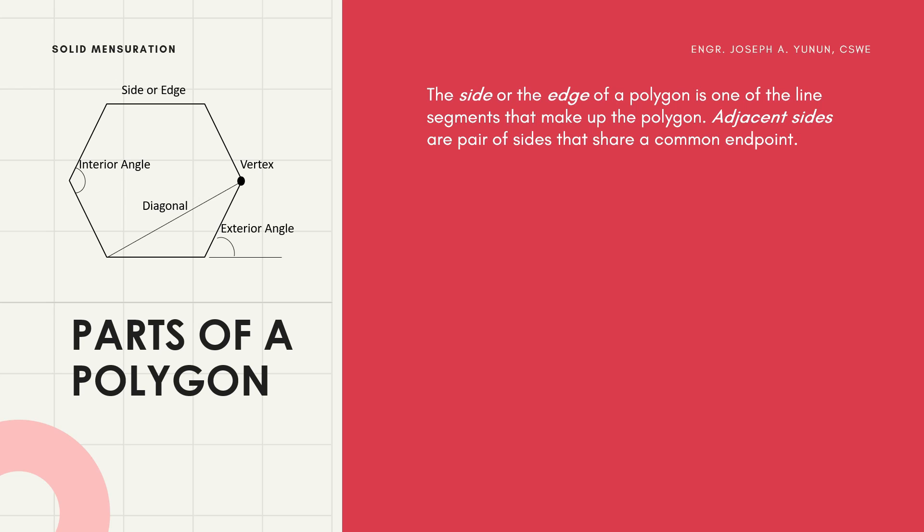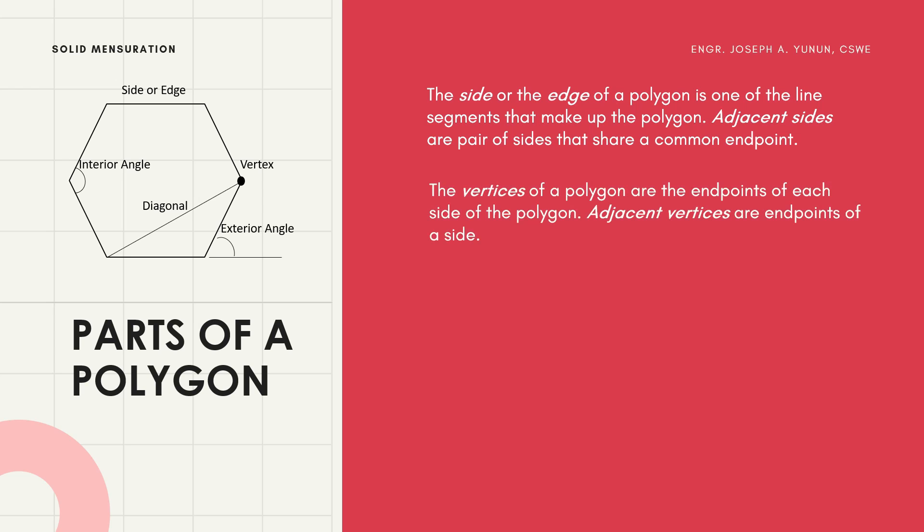The vertices of a polygon are the endpoints of each side of the polygon. Adjacent vertices are the endpoints of a side. A diagonal of a polygon is a line segment joining two non-adjacent vertices of the polygon.